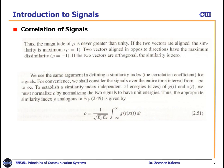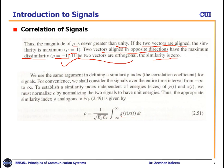Previously we discussed correlation for two vectors. Now, for signals g(t) and x(t): the magnitude of rho is never greater than unity. If two vectors are aligned, theta is zero so rho equals one. Two vectors in opposite directions have rho equals minus one — maximum dissimilarity. If two vectors are orthogonal — 90 degrees out of phase — similarity is zero. We apply the same argument used for vectors to define the correlation or similarity index for signals, since signals are treated as vectors in communication.